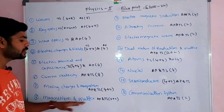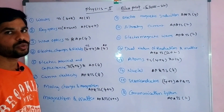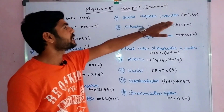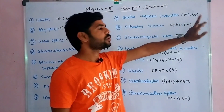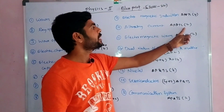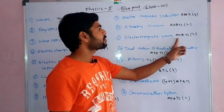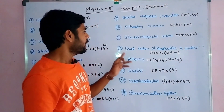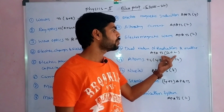For Magnetism and Matter, both AP and TS have 2-mark questions. For Electromagnetic Induction, both AP and TS have one SAQ question. For Alternating Currents, AP and TS have 2-mark questions. Electromagnetic Waves carries 2-mark questions for both AP and TS. Dual Nature of Radiation and Matter also has 2-mark questions for both AP and TS.